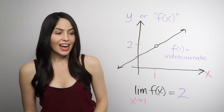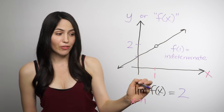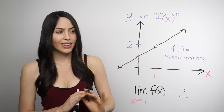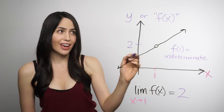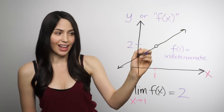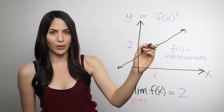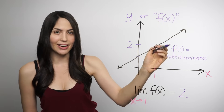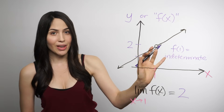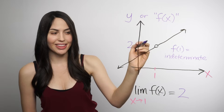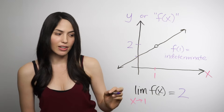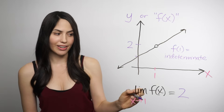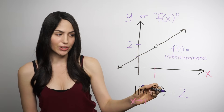Notice that I'm not saying the function equals 2 at x equals 1 — it's not that. And in fact, if you look at the graph, there's a hole at x equals 1. We don't even know what the function equals there. It's not defined — it's indeterminate. Even though there's this hole at that point x equals 1, we can still say that the limit as x approaches 1 is equal to 2.